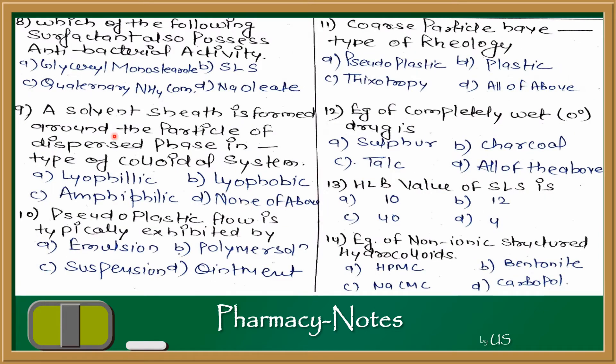The 8th question is: Which of the following surfactant also possesses antibacterial activity? Which surfactant has antibacterial activity also? Well, if you remember, I gave you an example - Benzalkonium Chloride and Cetrimide. Both show surfactant and antibacterial activity. So all of the quaternary ammonium compounds. So this answer is C, quaternary ammonium compound.